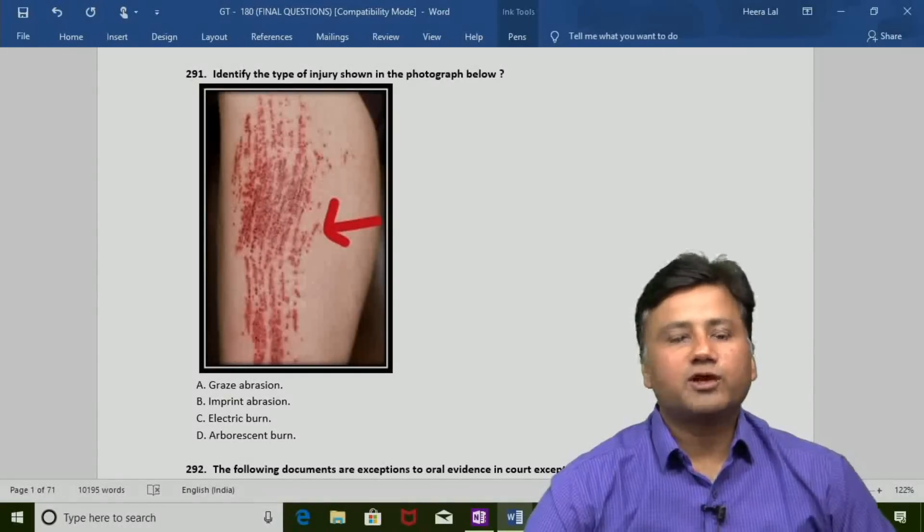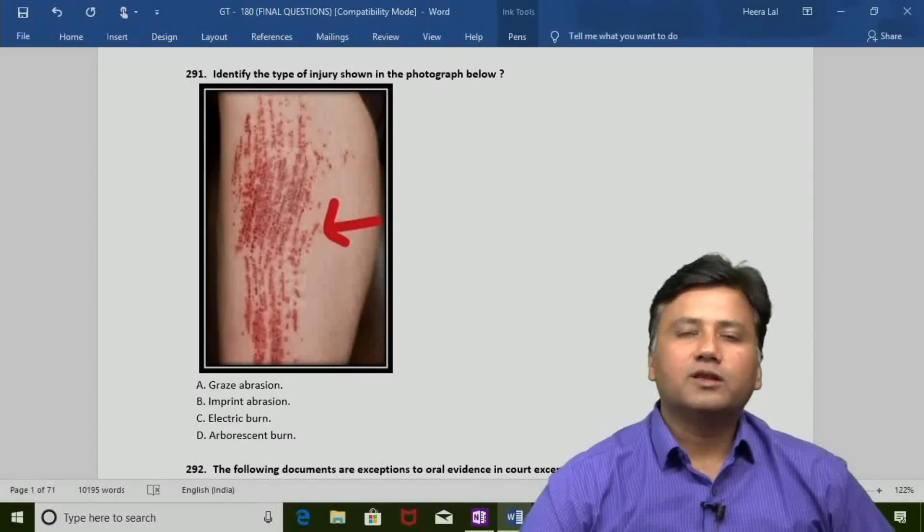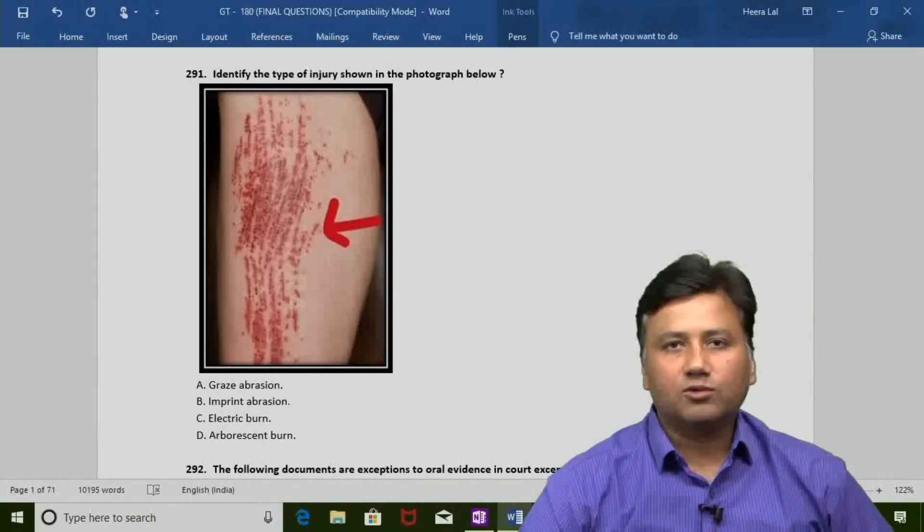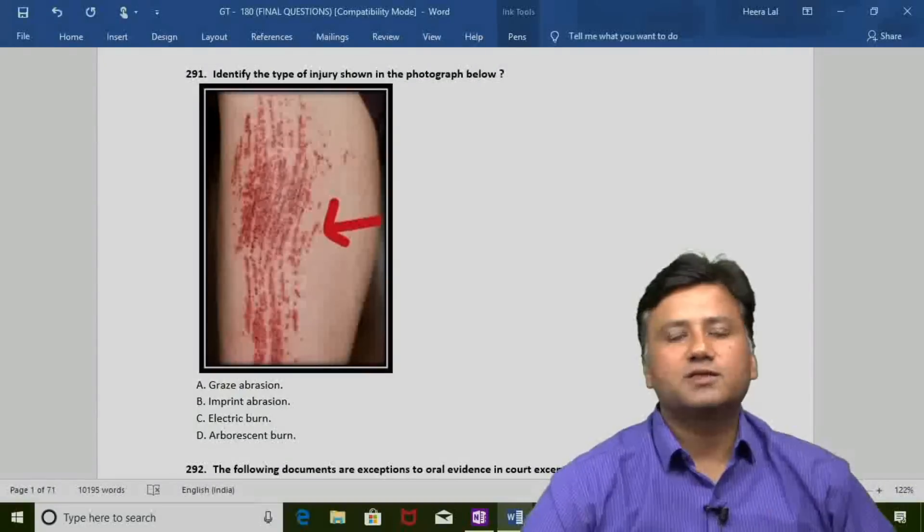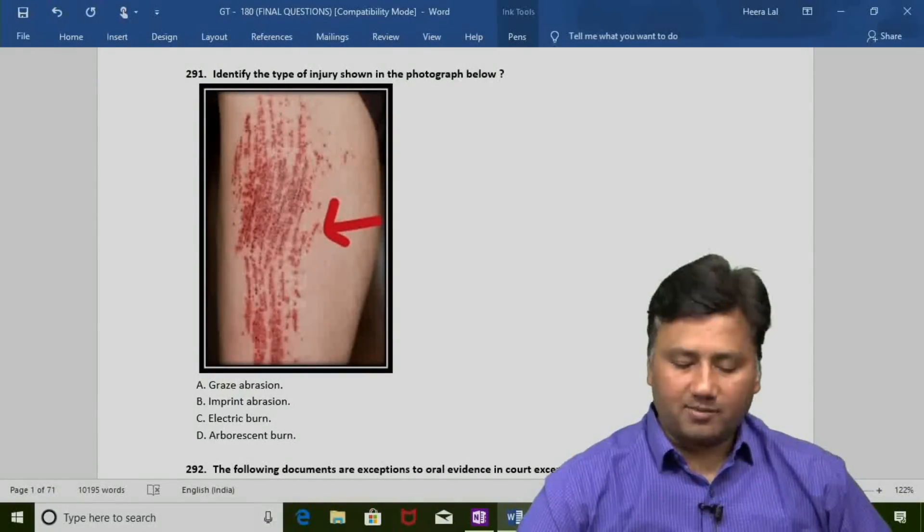Let us see what we see in the photograph. There are some abrasions which are present on the limb in a linear pattern. We can see a lot of lines of abrasions there, and these are examples of grazed abrasions.